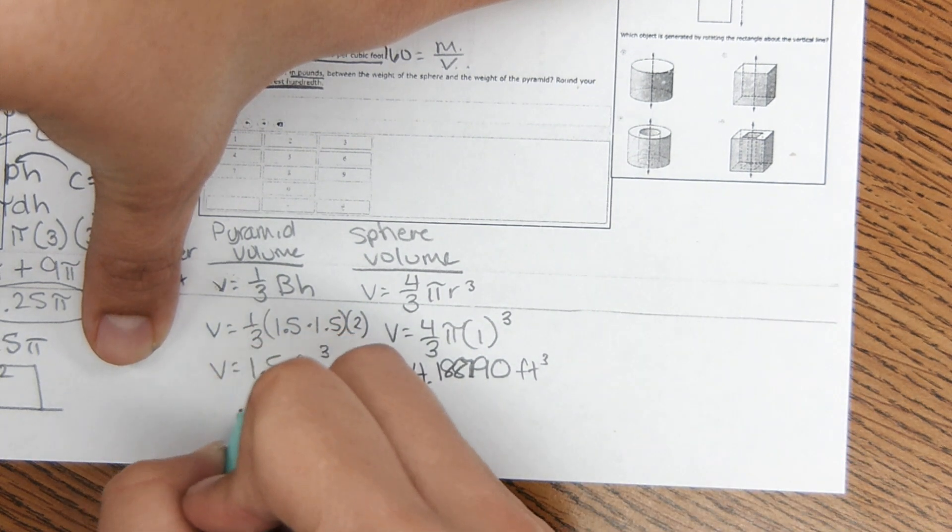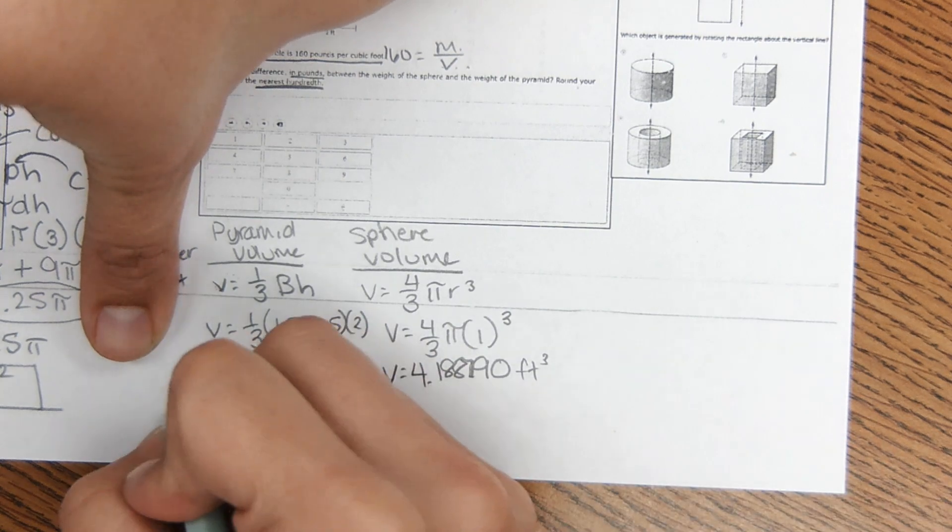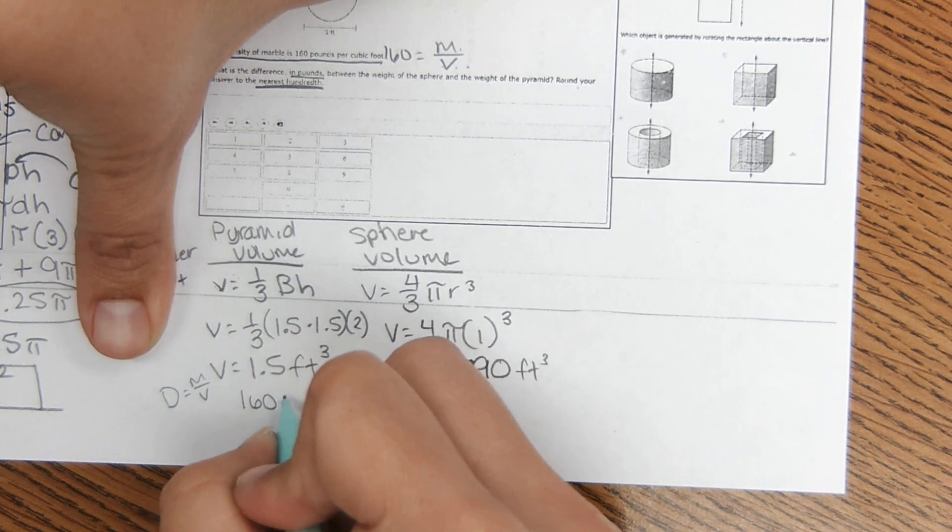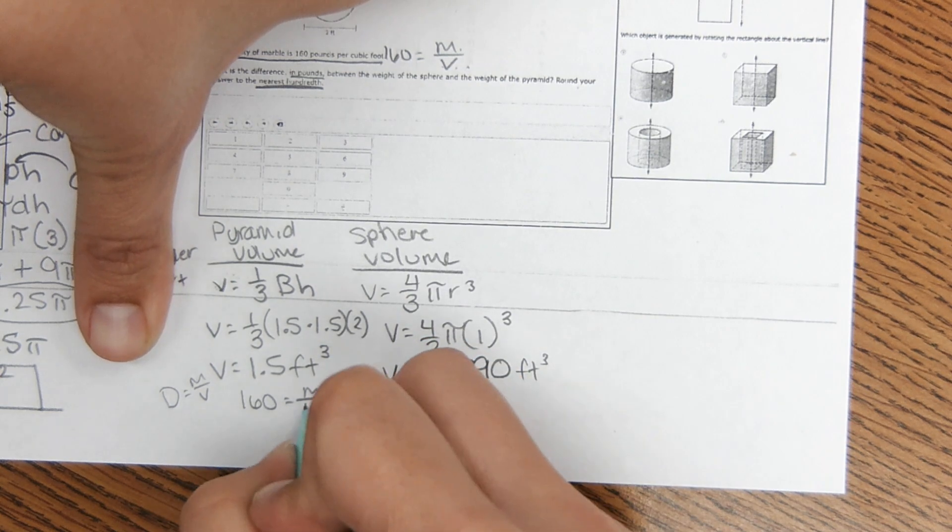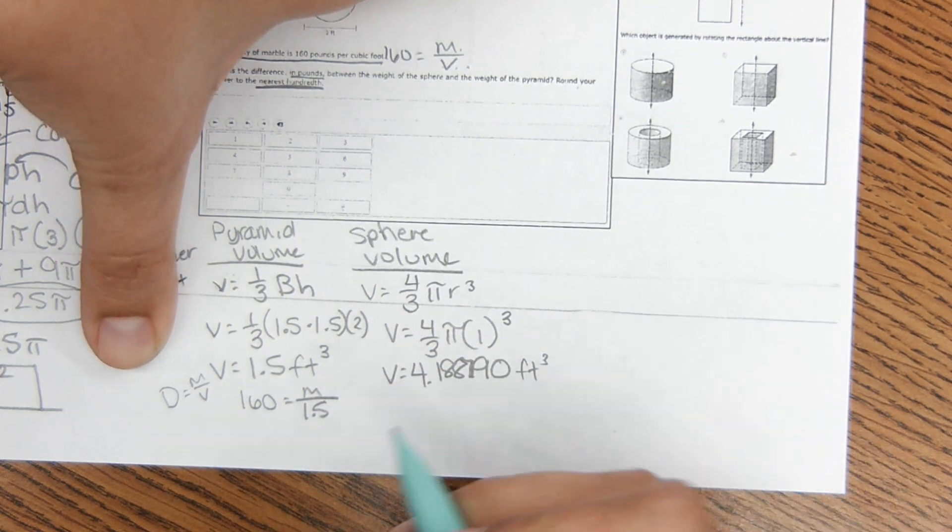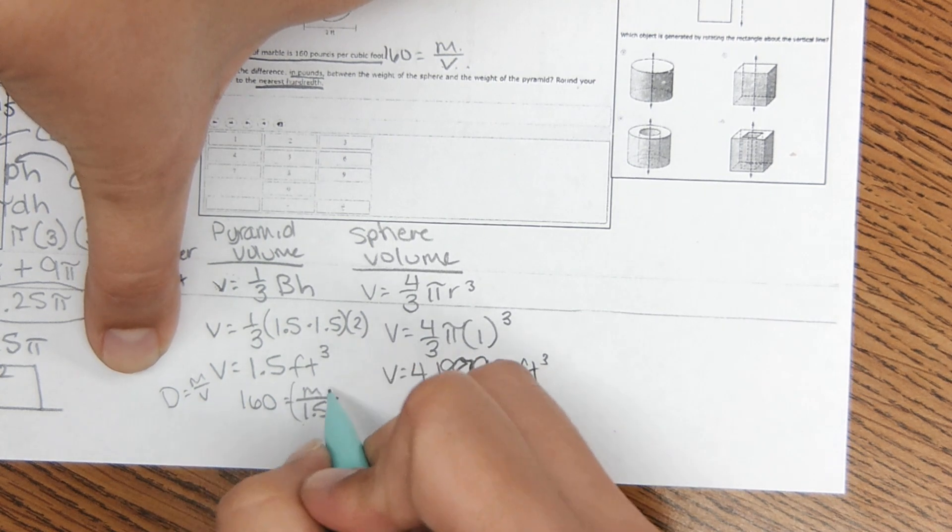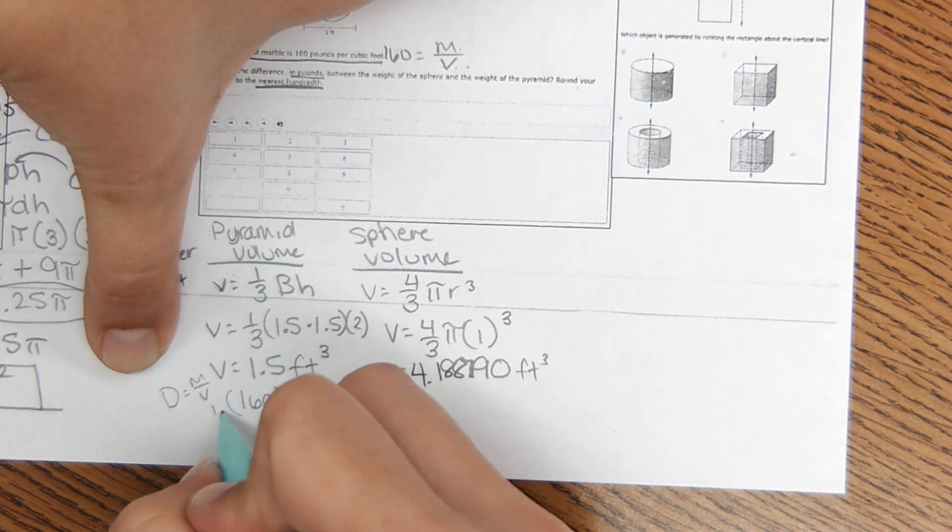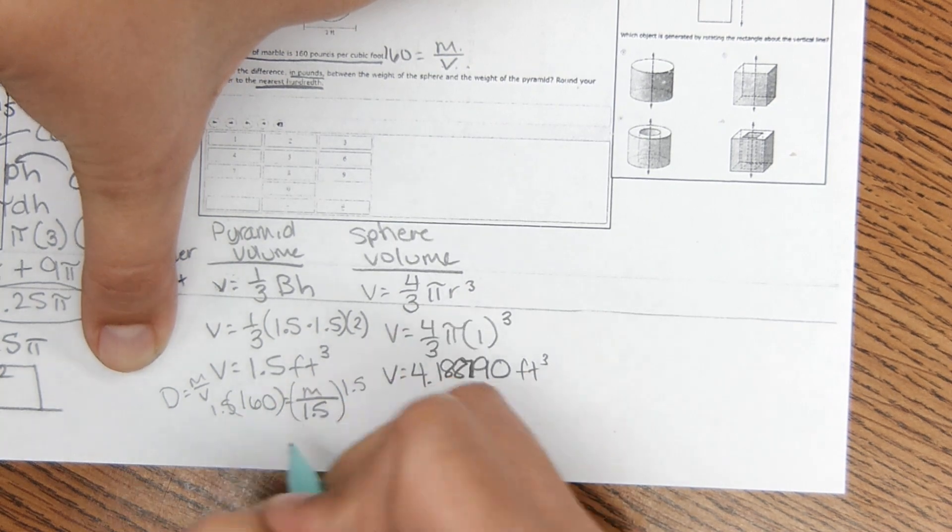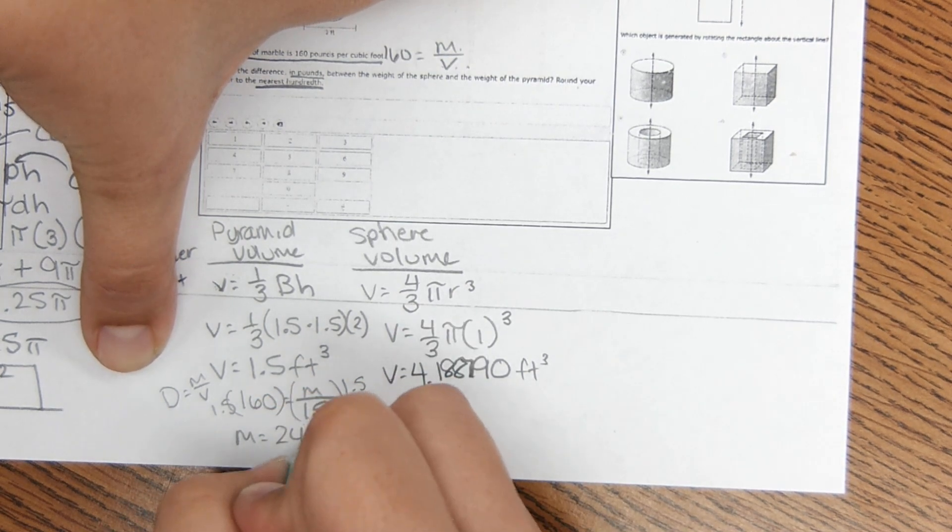Okay, I need to find the mass of each. So density equals mass over volume. The density is 160 mass over volume. Multiply this by 1.5, and it comes out to mass 240 pounds.